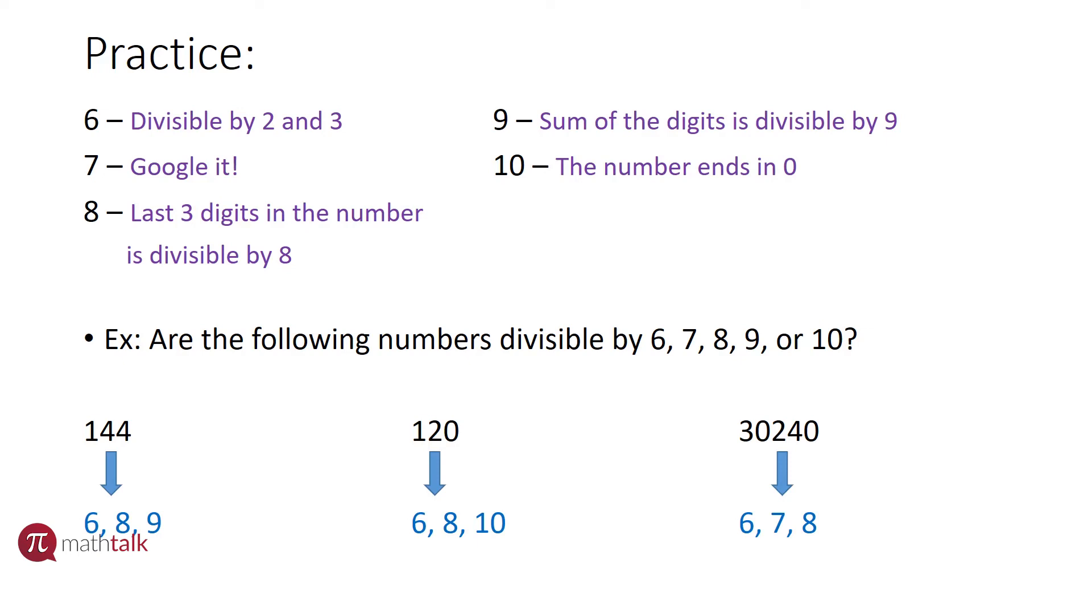Okay, looking at nine, I summed the digits a moment ago. I got nine, and nine is divisible by nine because any number is divisible by itself, so nine works. And again, the number ends in zero for that easy rule, which means ten works.